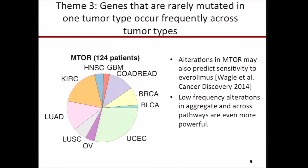In addition, we also recently learned that certain mTOR mutations may predict sensitivity to mTOR inhibitors like everolimus. As with TSC1, mTOR mutations occur rarely in any given tumor type, but in aggregate they provide a rationale for a similar basket trial. Thus, if you consider low-frequency alterations across tumor types and within pathways, one can further imagine clinical trials that can be designed with this knowledge.